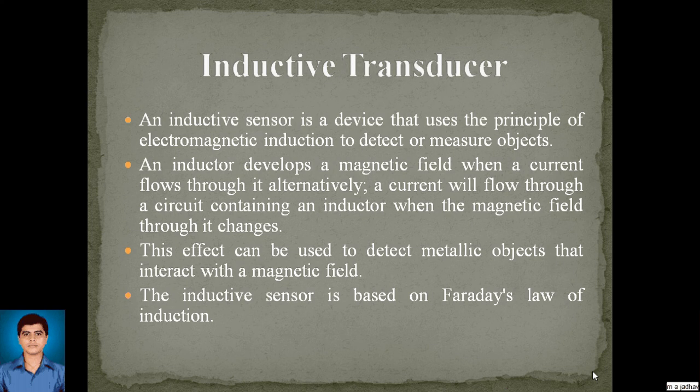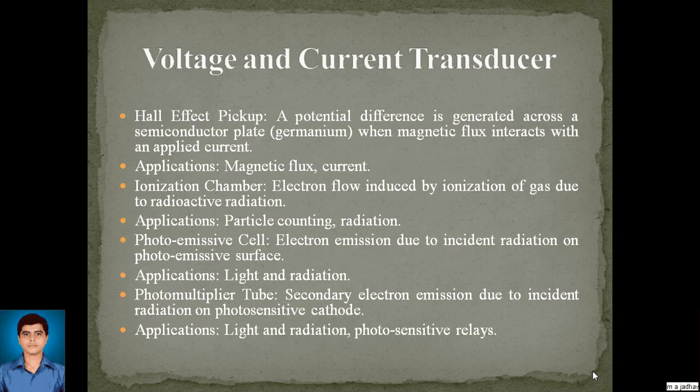Inductive transducers: an inductive sensor uses the principle of electromagnetic induction to detect or measure objects. An inductor develops a magnetic field when current flows through it; alternatively, a current flows when the magnetic field changes. This effect detects metallic objects that interact with a magnetic field, and the inductive sensor is based on Faraday's law of induction.